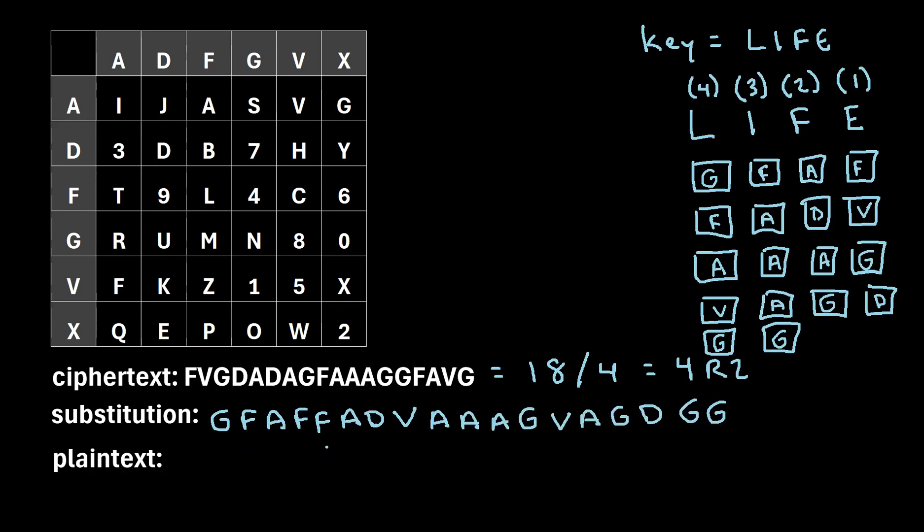Once we've written out this entire substitution string, the very last step to get our plaintext is to convert this back to the letters from the Polybius square. So for example, the first two letters we know will correspond to GF. So if we identify row G and column F, that corresponds to the letter M inside the Polybius square. So that means GF will correspond to M.